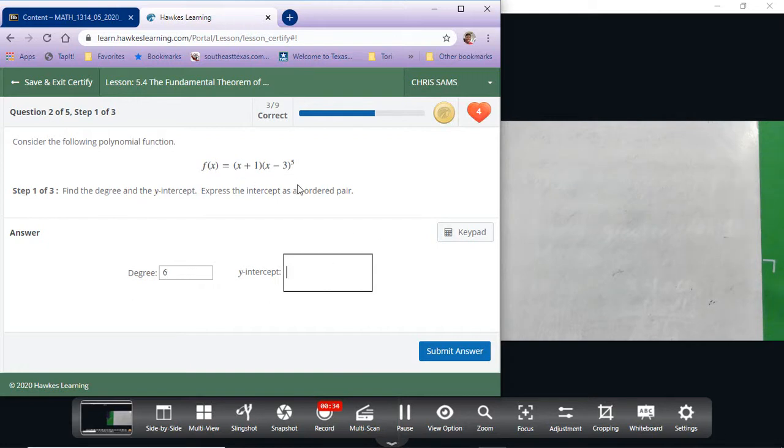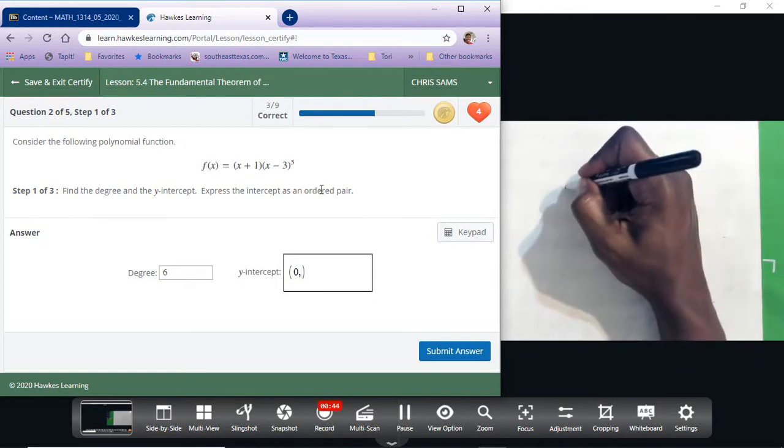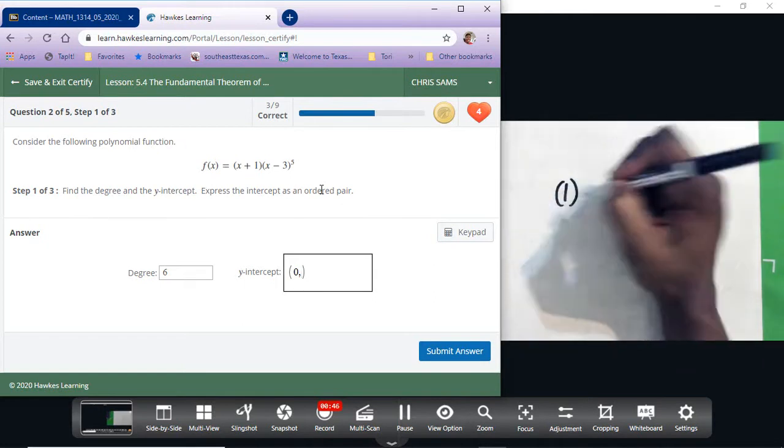The y-intercept comes from multiplying the numbers together, and we have to write as an ordered pair. X is always zero, so the first number we have in the first parentheses is one. We have to multiply that times negative three to the fifth.